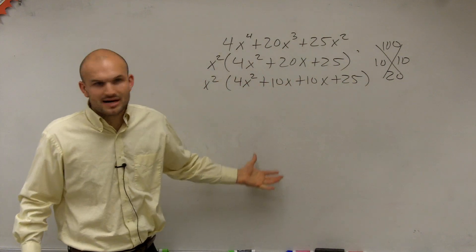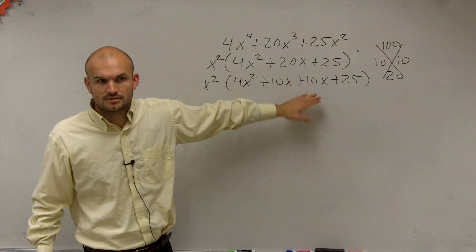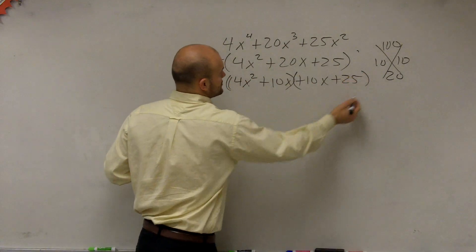So 4x squared plus 10x plus 10x plus 25. Then you could follow the same process. Factor by grouping. Group these first two terms. Group the last two terms.